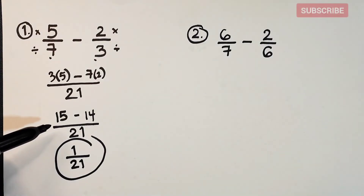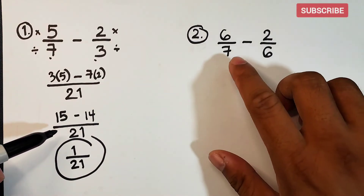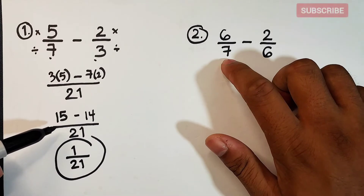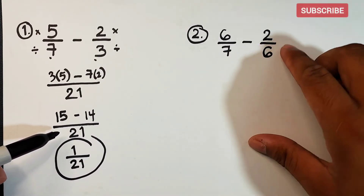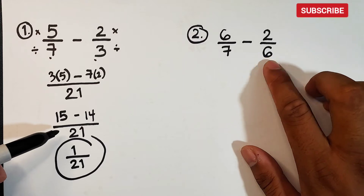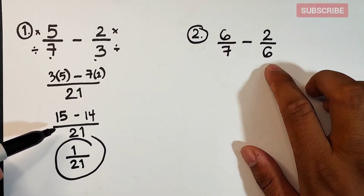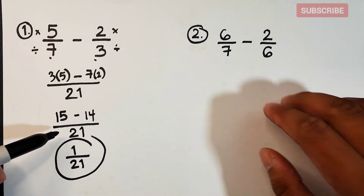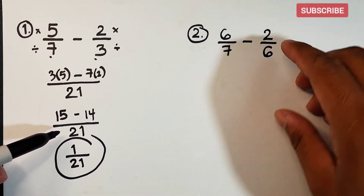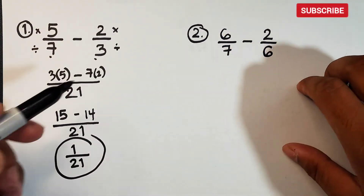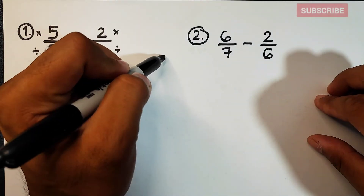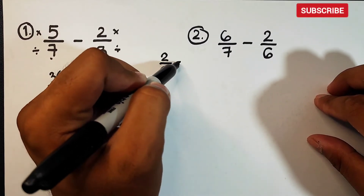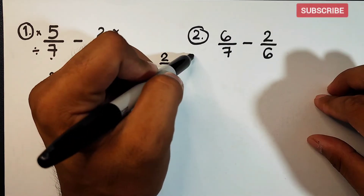Let's continue with item number 2. Here we have 6 over 7 — with a denominator of 7 — minus 2 over 6, with a denominator of 6. In this case, we could find the LCD of 7 and 6, but I noticed that 2 over 6 can be simplified as 1 over 3.